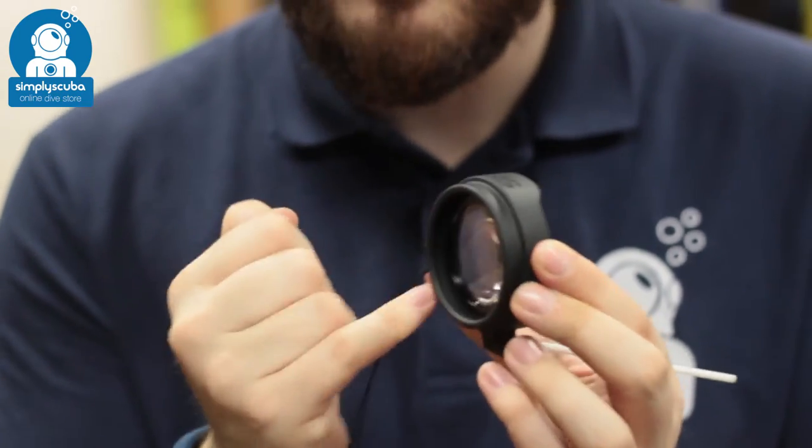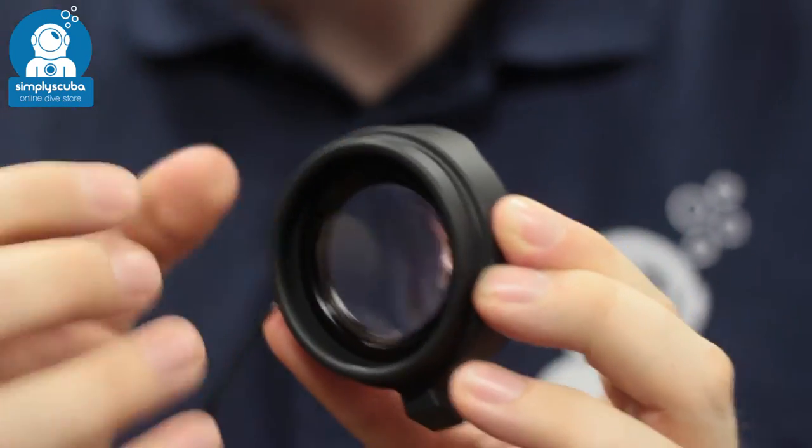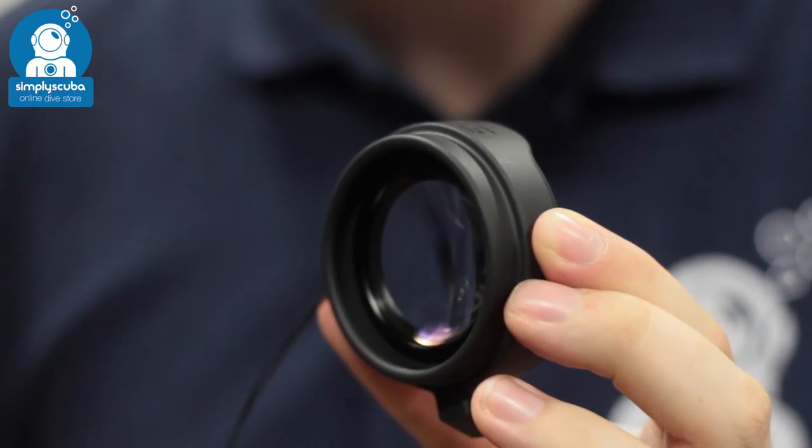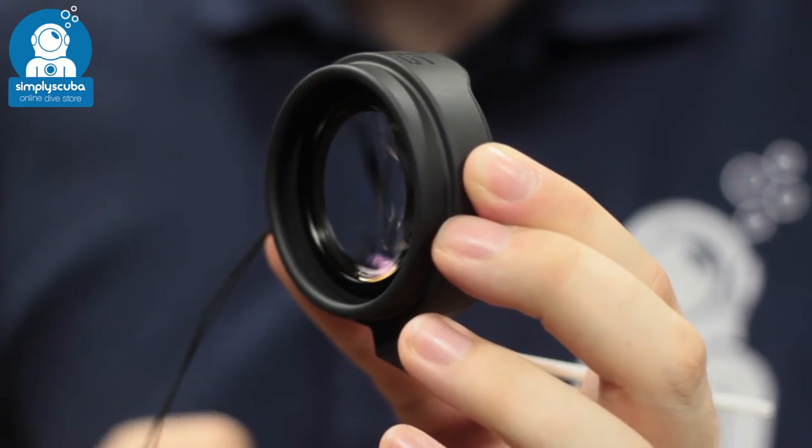You've got this rubberized cowling all the way around it, so that's going to attach over the lens really quick and easy. You can put it on and take it off during a dive.